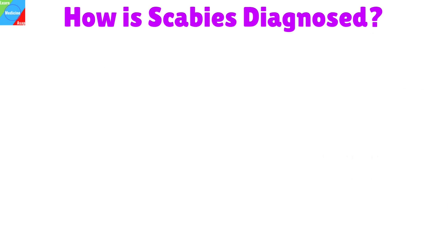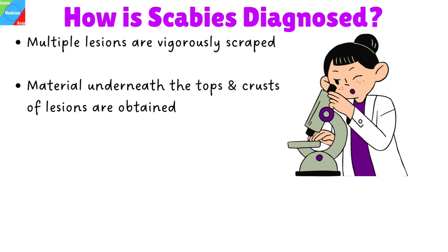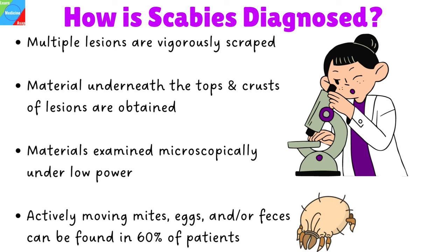How is scabies infestation diagnosed? Multiple lesions are vigorously scraped. The best lesions for diagnosis are burrows, vesicles, and non-excoriated papules, and the best scrapings obtain the material underneath the tops and crusts of the lesion. The material obtained is then transferred onto a glass slide and examined microscopically under low power. Actively moving mites, eggs, and feces can be found in 60% of patients in whom the diagnosis is strongly suspected.